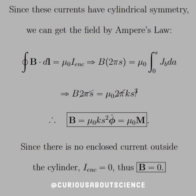Since these currents have cylindrical symmetry, we can apply Ampere's law to find the field. The closed integral B·dL equals μ₀I_enclosed. With the cylinder, we have a circular Amperian loop of circumference 2πS. The enclosed current is the integral from 0 to S of the volume bound current, since we are inside in this case.